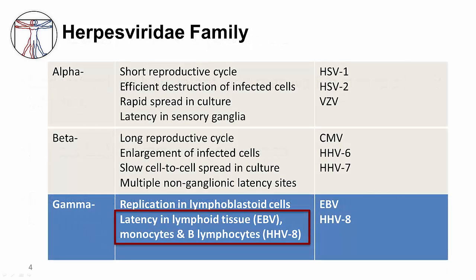Recall from the previous video on acute EBV infection that Epstein-Barr virus is one of the eight human herpes viruses. One of the hallmark features of the herpes viruses is their ability to maintain latency in particular cells and then potentially reactivate to cause different disease processes. EBV is one of the two gamma herpes viruses, along with Human herpesvirus 8. The gamma herpes viruses replicate in lymphoblastoid cells and maintain latency in lymphoid tissue, as is the case with EBV, or in monocytes and B lymphocytes, as is the case with HHV8.